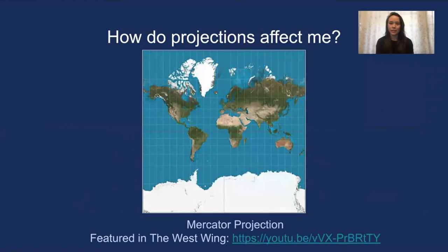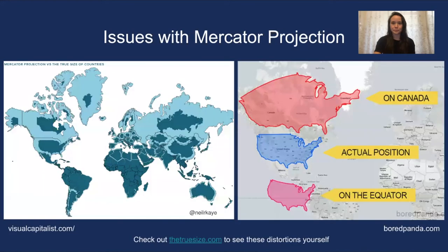So how do projections affect us in real life? This is the Mercator projection — it's the most commonly used projection for global visual maps. If you were to walk into a classroom, the map on the wall would likely be in the Mercator projection, and its issues are so common that it was featured in a West Wing episode, which is hilarious and I've linked to below if you're interested. The Mercator projection is criticized for reinforcing a colonialist perspective because size is sometimes associated with power, and as you can see on the image on the right, Russia, Europe, and North America's sizes are all inflated. Greenland is shown to be bigger than South America when in fact it's only one eighth of the size. The United States' size is also inflated as it moves away from the equator in the Mercator projection.